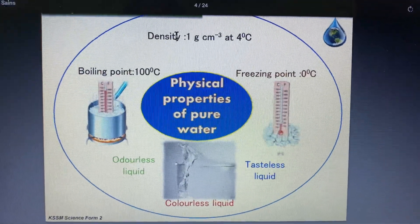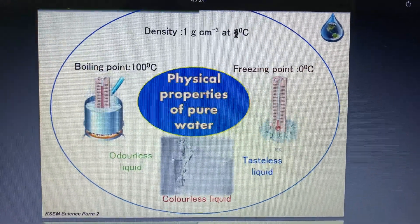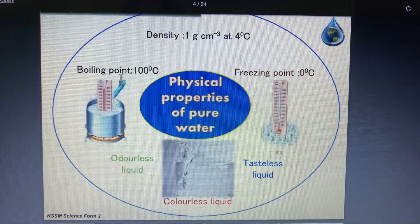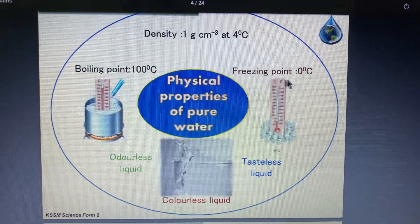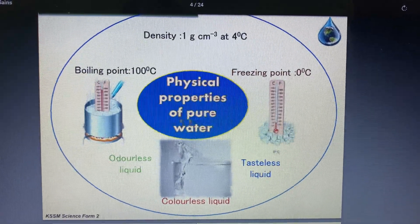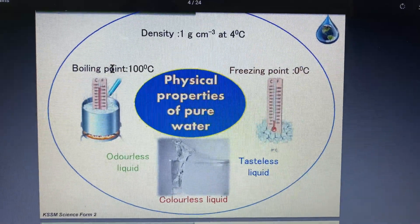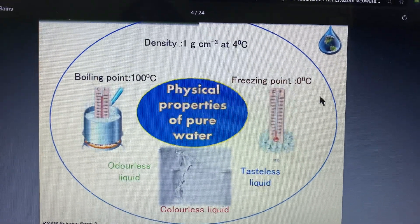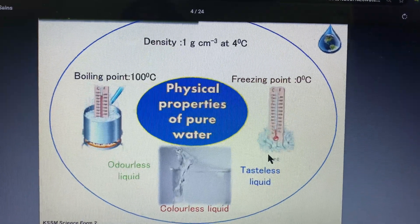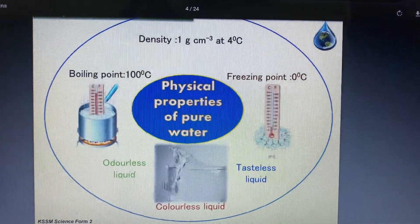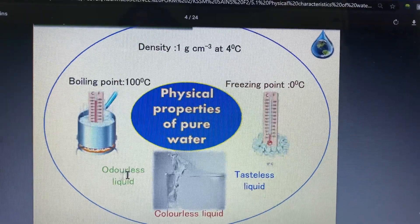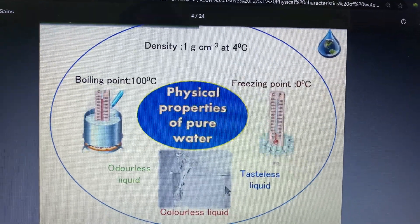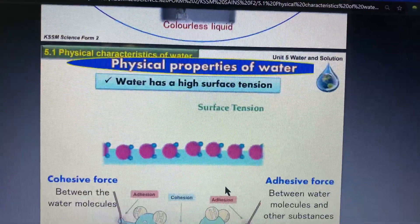The properties of pure water: number one, density is 1 gram per cm³ at 4 degrees Celsius. The boiling point of pure water is always 100 degrees Celsius. The freezing point of pure water is always 0 degrees Celsius. At the boiling point, liquid changes to gas, and at the freezing point, liquid changes to solid. Pure water is also odorless — no smell at all — and tasteless.